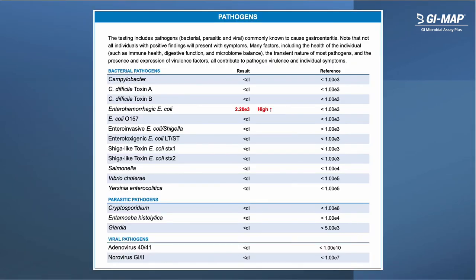On page one are the bacterial, parasitic, and viral pathogens that are common causes of acute gastroenteritis. Note that in some cases some of these pathogens may be present more chronically, such as Giardia, and may contribute to chronic symptoms. However, most commonly, pathogenic infections often tend to be asymptomatic — the rate will vary from pathogen to pathogen. A key example is Clostridium difficile, where the majority of detected cases appear to be asymptomatic, consistent with research literature that the majority of detected C. diff in stool samples represents asymptomatic cases.